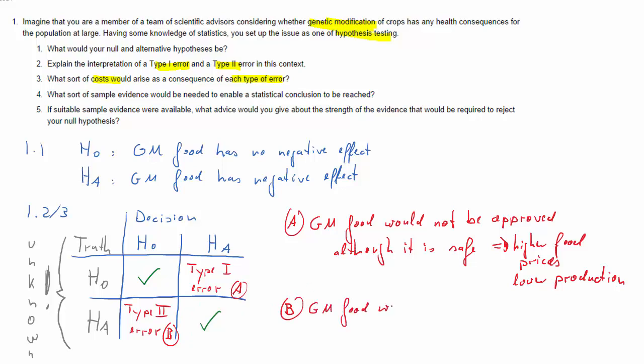What about situation B, Type II error? That's where the truth is HA but we decide H0. That's the situation where we would potentially approve GM food to be used although there are health risks. The outcome here could be just the obvious one: negative health effects on individuals or the population as a whole.